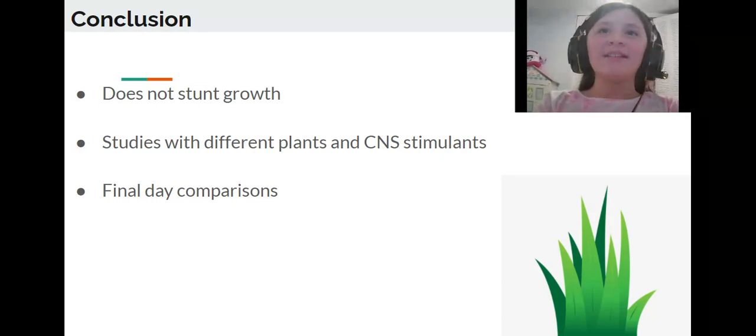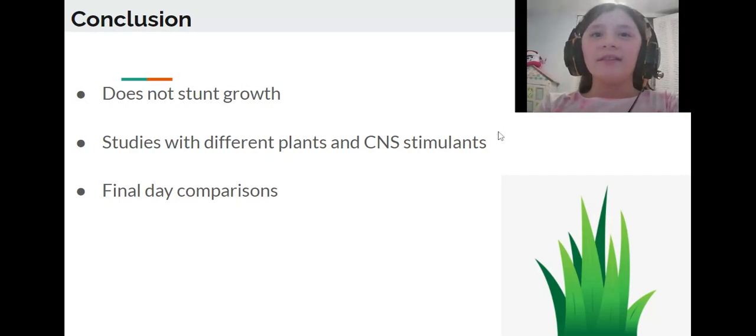Further study should be conducted with different plants and CNS stimulants to reach a definite conclusion. On the final day of testing, the average height of plants 1A through 5A was 17 centimeters, 1B through 5B was 17.2 centimeters, 1C through 5C was 19 centimeters, and 1D through 5D was 18.6 centimeters. These results suggest that caffeine acts as a weak fertilizer, though more studies are needed.